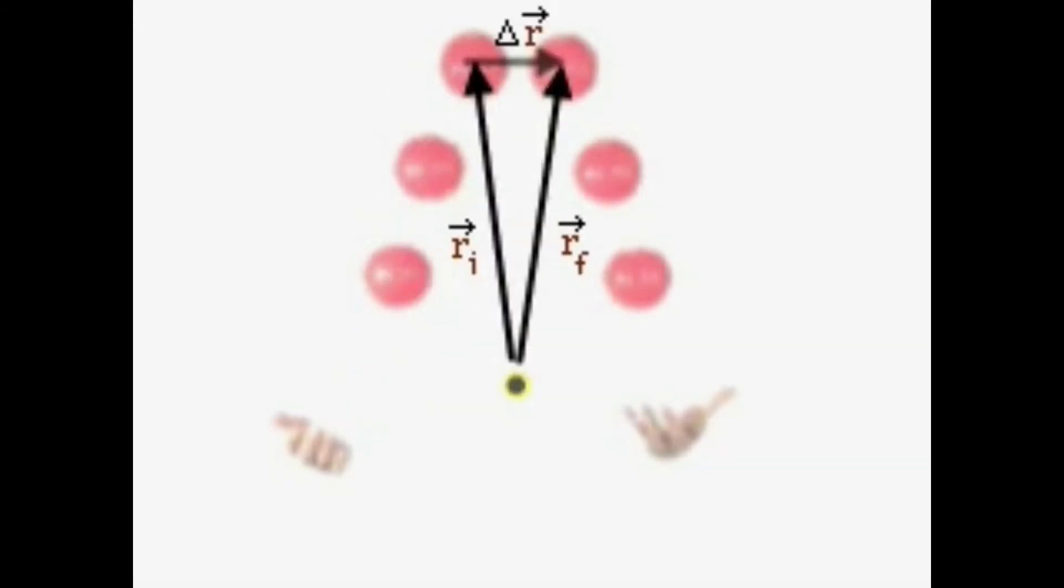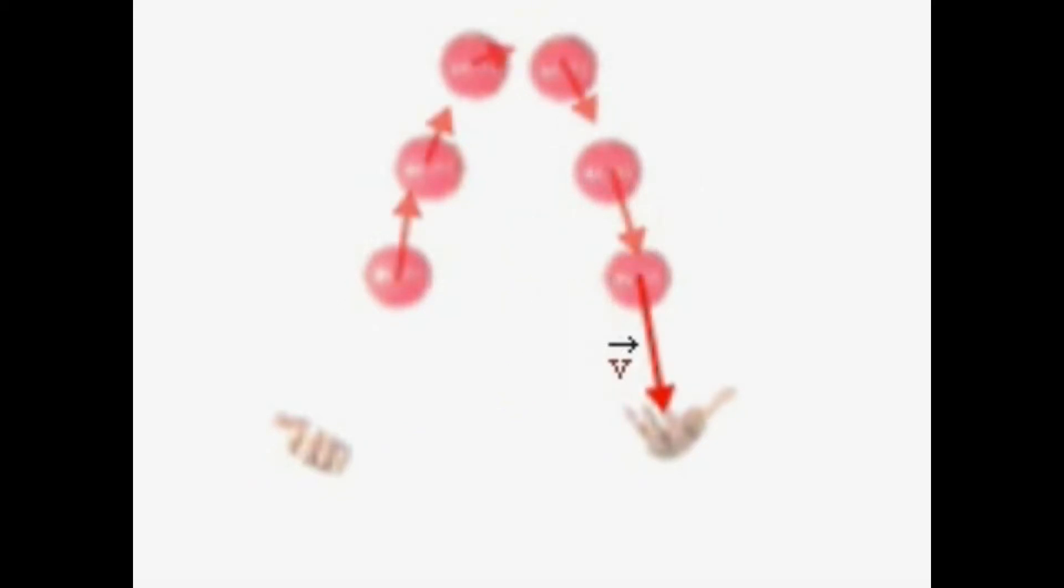By finding successive differences between the position vectors, we can see the directions of the average velocity vectors during each time interval. Note that the vertical component of the velocity changes, and the horizontal component of the velocity is constant. So there is a downward acceleration, but no acceleration in the horizontal direction. From the differences between velocity components, we can see the direction of the acceleration vectors. Acceleration vectors are all downward and of the same magnitude. Because the ball's acceleration is constant, its motion can be described with the constant acceleration equations of kinematics in two dimensions. These equations can be solved to reveal that the path of a ball in projectile motion is parabolic, regardless of the launch angle.